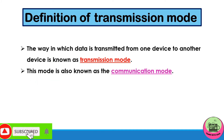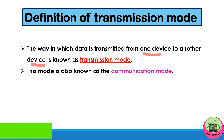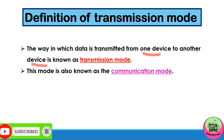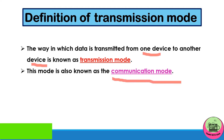First is the definition of transmission mode. The way in which data is transmitted from one device to another device is known as transmission mode — that is, how the data is transmitted. The other name for transmission mode is communication mode.